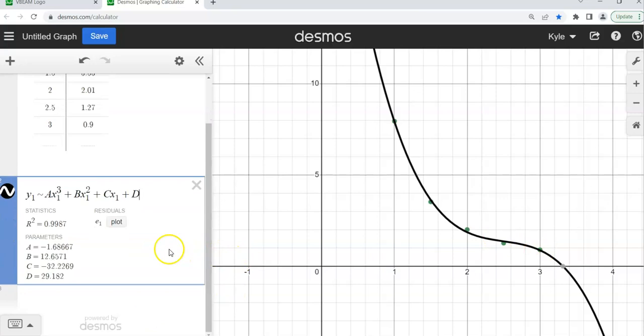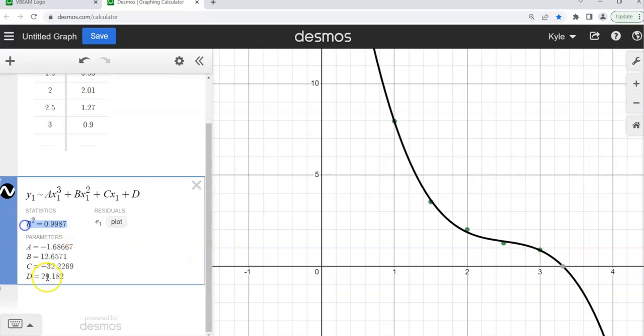Pretty darn close looking at it. Look how close this model is to hitting all of our dots. Almost perfect. Well, I can see exactly how good it is statistically speaking by looking at the R² value. The closer it is to one, the better the fit. Man, oh man, is this a really good fit. R² is 0.9987. That's what it's asking for on number three. So go ahead and write that down.